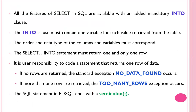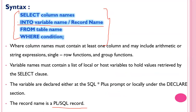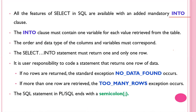All the features of a scalar SELECT are available, with the added mandatory INTO clause. The INTO clause must contain one variable for each value returned from the table. The SELECT INTO statement must return one and only one row - it is the user's responsibility. If no rows are returned, the exception NO_DATA_FOUND is raised; if more than one row is returned, you receive the TOO_MANY_ROWS exception.